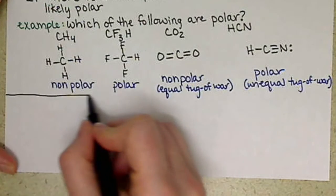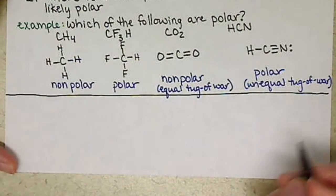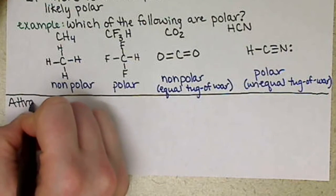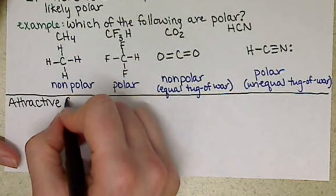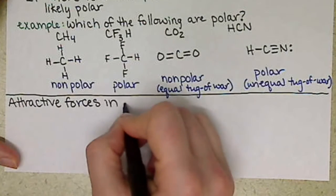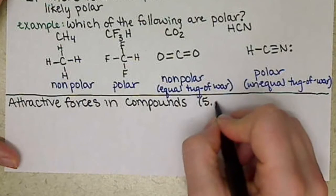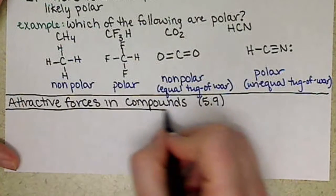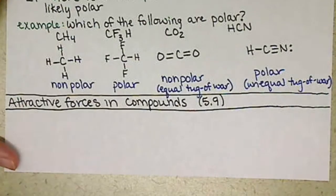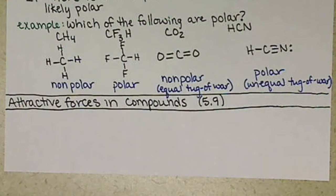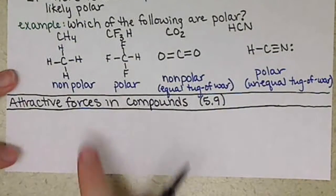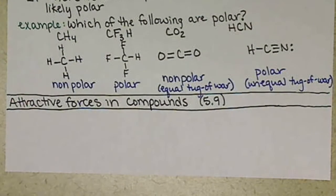The very last section of chapter 5, section 5.9, goes into a lot of the attractive forces in compounds. Mostly it's discussing when we have polar molecules, basically the positive and negative, the opposites are going to attract. These attractive forces and opposites attract are important if we were wanting to go further in chemistry.